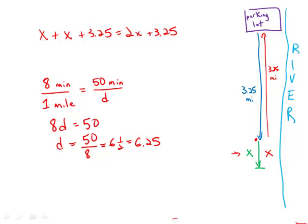Now I'm going to set this equal. In 50 minutes, he runs 6.25 miles, and that must equal 2x plus 3.25 miles. So, 2x plus 3.25 equals 6.25.